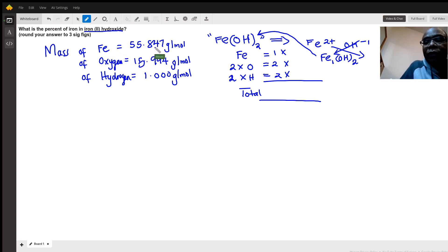Each mole of iron has a mass of 55.847 in the periodic table. Oxygen has a mass of roughly 16. Hydrogen has a mass of one. But you see, we have one iron, so I'm going to say one times 55.847.